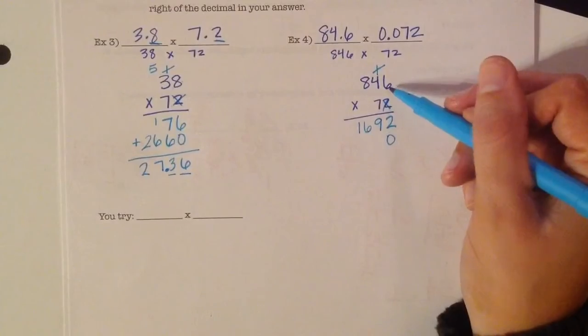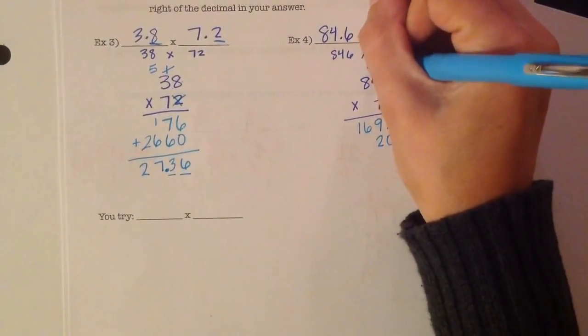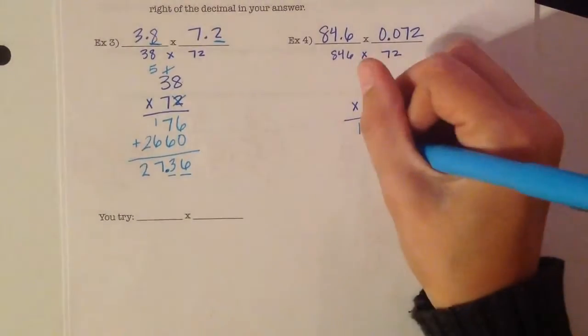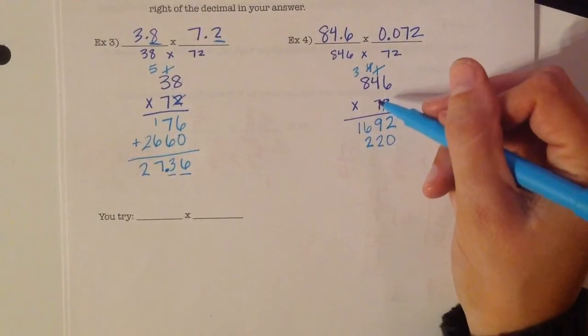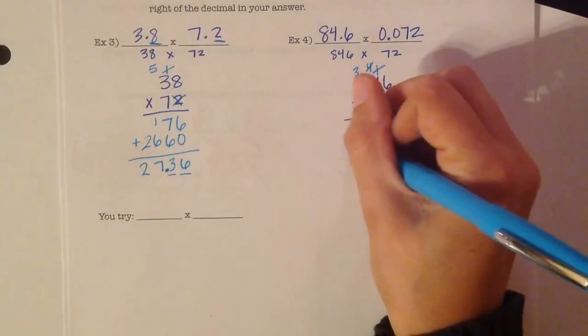7 times 6 is 42. So 2 carry the 4. 7 times 4 is 28 plus 4 is 32. So 2 carry the 3. And then 7 times 8 is 56 plus 3 is 59.